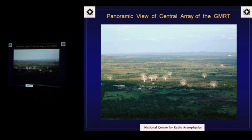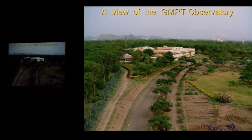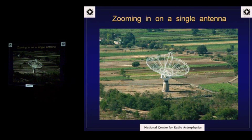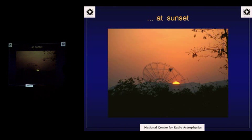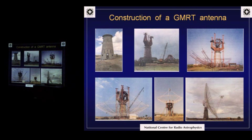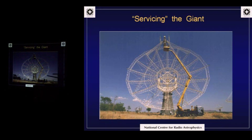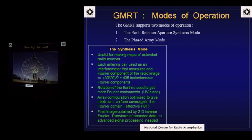Here's a bird's eye view showing the central square antennas. This is a view of the observatory building with the antennas in the background, and a view of a single antenna. As you can notice, the dishes appear completely transparent, but the reflecting surface is actually a mesh. This is a sequence showing the construction of a typical GMRT antenna, starting with the concrete tower on which the antenna structure is raised. These antennas are quite large, and we use special cranes called cherry pickers to service the focus of the dish where the initial electronics are located.